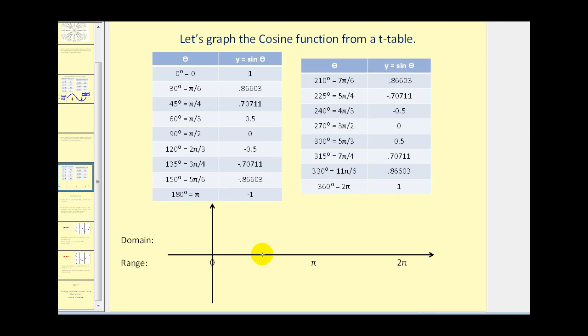Again, let's divide this into four parts and plot some key values. So I'll go ahead and plot the point zero, one, pi over two, zero, pi, negative one, three pi over two, zero, and two pi, one.